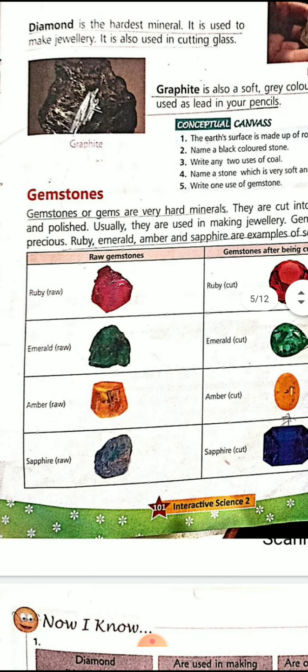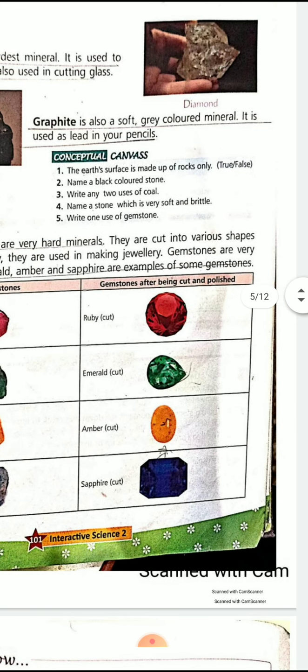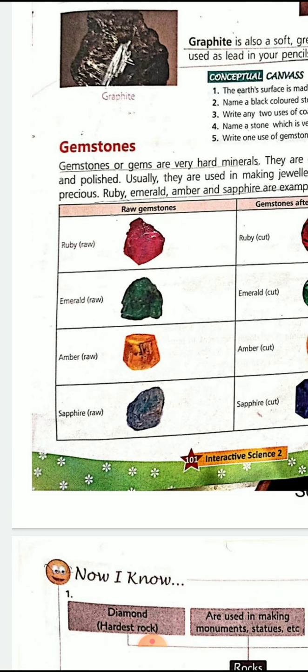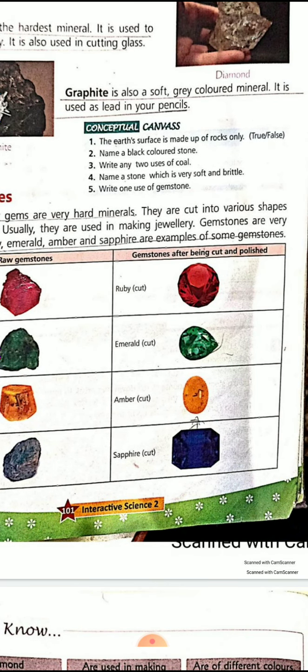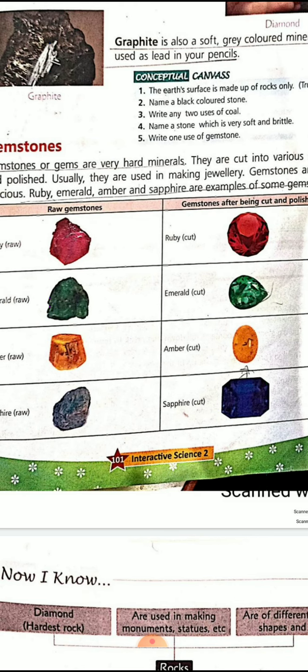Gemstones are very precious. Ruby, emerald, amber, and sapphire are examples of some gemstones. These are very precious and are made into jewelry. Ruby is red in color — I can ask you the color also, so you have to remember. Ruby is red, emerald is green, amber is yellow or gold color, and sapphire is blue or navy blue color.